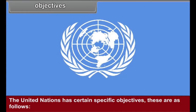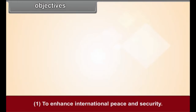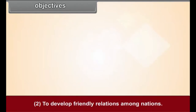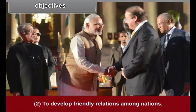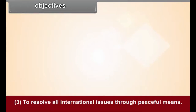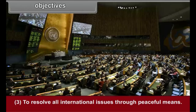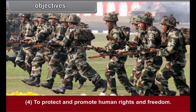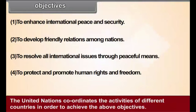The United Nations has certain specific objectives. These are: 1. To enhance international peace and security. 2. To develop friendly relations among nations. 3. To resolve all international issues through peaceful means. 4. To protect and promote human rights and freedom. The United Nations coordinates the activities of different countries in order to achieve the above objectives.